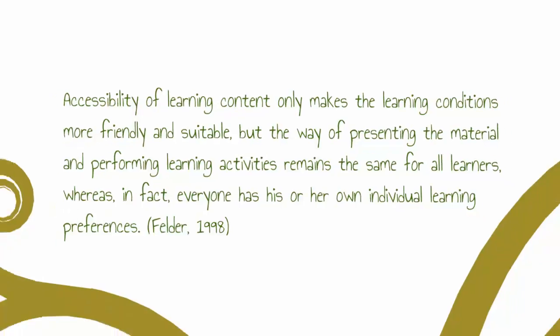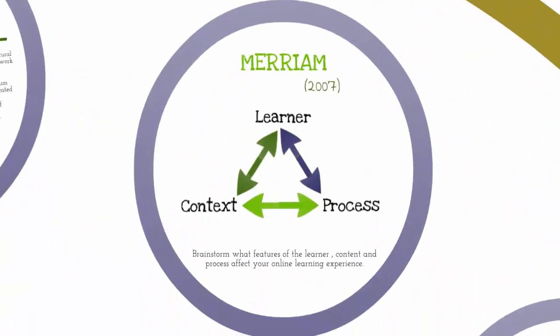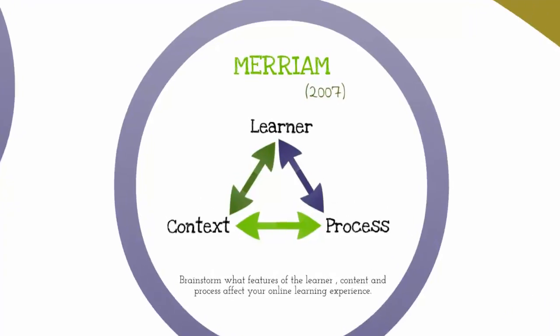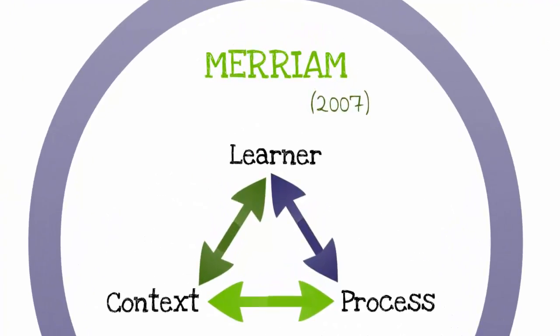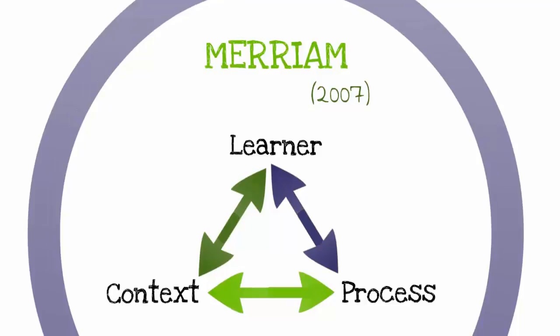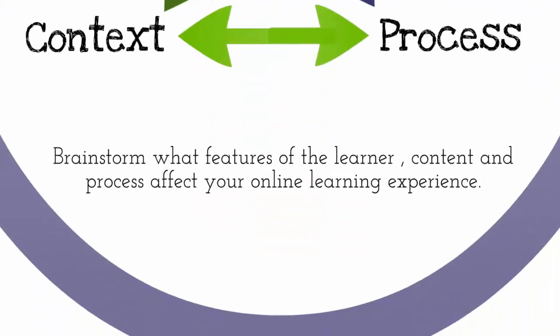Miriam puts this learning in context when she looks at adult education. She believes we need to examine three parts of learning to understand how our learning processes evolve: the learner, the context of the learning, and the process. Brainstorm what features of you the learner, the content of the course, and the process of learning online affect your online learning experience.